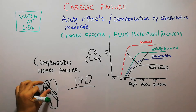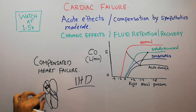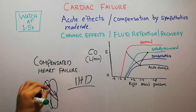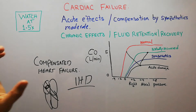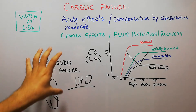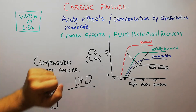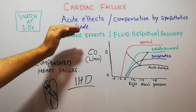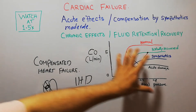For example, a vessel supplying blood to the different parts of the heart, if that vessel is compromised, this leads to ischemic heart disease and is one of the most important causes of cardiac failure. Once cardiac failure occurs, there are many events which follow — initially acute effects, then chronic effects — and we are going to discuss these with the help of a graph.